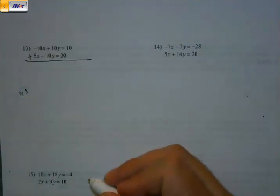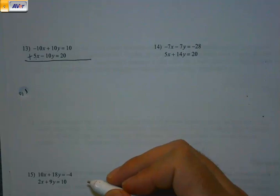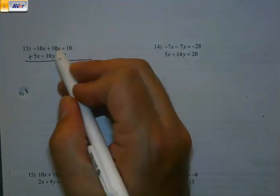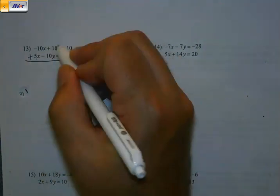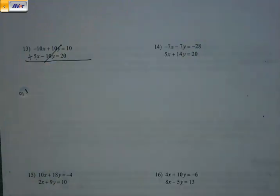Let's see. Negative 10 plus 5, that doesn't cancel out. My x's are still there. Let's check the y's. 10y plus negative 10y, that does cancel.